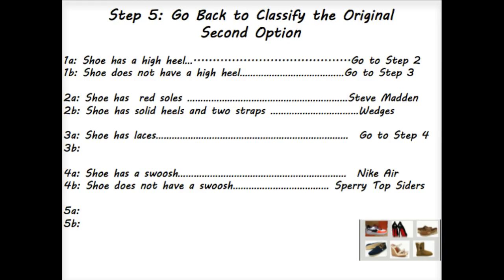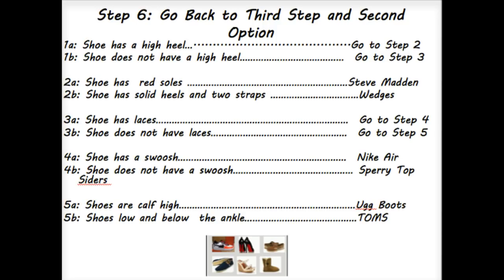Since we've classified part 3A all the way through, we have to go back to 3B and classify that all the way through to finish up our dichotomous key. So if a shoe does not have laces, we jump down to step five. If shoes are calf high and don't have laces, they're going to be our UGG boots. And if our shoes are low and below the ankle, they're going to be our Toms.